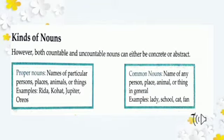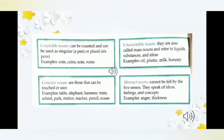Oreos is the name of a specific biscuit, so 'Oreo' is a proper noun. Now for common nouns: the name of any person, place, animal, or thing in general is a common noun. Because we are referring generally — for example, 'lady' is a common noun.